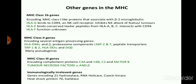Let's talk about the MHC class 2 genes. These encode several antigen processing genes including HLA-DM alpha and beta, proteasome components LMP2 and LMP7, peptide transporters TAP1 and TAP2, and HLA-DO alpha and DOB. These are among the many pseudogenes present on chromosome 6 — the MHC molecule gene locus.